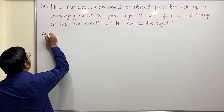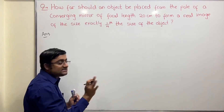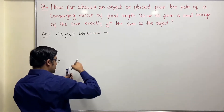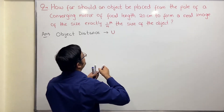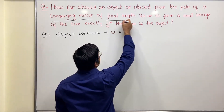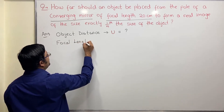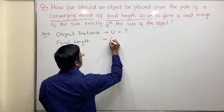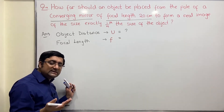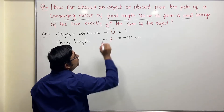How far should an object be placed — that means the unknown here is object distance, denoted by u, which is a question mark. From the pole of a converging mirror — a concave mirror of focal length 20 centimeter. Focal length f is given as 20 centimeter, and since it is a concave mirror, focal length is negative: f = minus 20 centimeter.